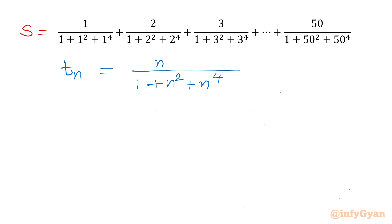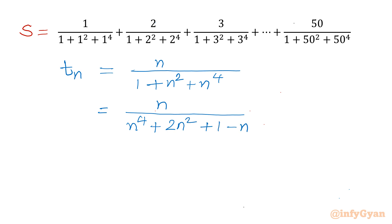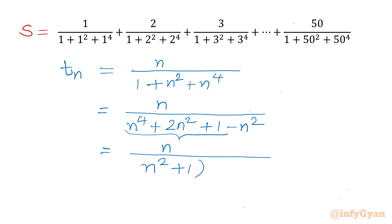Now I will simplify this general term with the help of algebraic manipulation and identities. So we have n over n⁴ + 2n² + 1, and then we compensate by subtracting n². The denominator becomes (n²+1)² - n², which is a perfect square minus n².